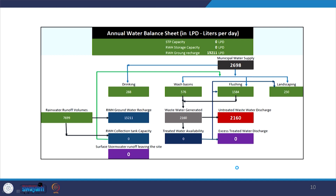Now we come to the water balance chart. Let us establish all the different components: drinking water requirement is 288 liters per day; wash basins require 576 liters per day; flushing requirement is 1,584 liters per day; and landscaping requirement is 250 liters per day. We also know the rainwater runoff volume is 7,699 liters per day on average. We have assumed this is recharged to the ground using the recharge pits.